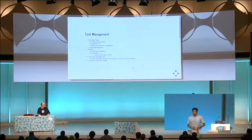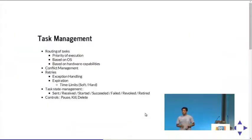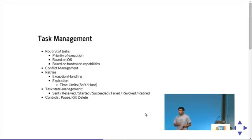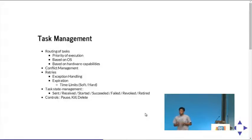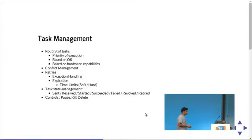Task management is a bit tedious in terms of understanding what kind of tasks you have. You may want to prioritize execution — for example, two machines where one connects to a faster primary database and one to a slower secondary. You can have priority execution using Celery by defining two queues — one fast queue and one slow queue. When you push tasks, push the faster tasks to the appropriate queue, and workers read one or both queues. You can also route tasks based on OS environment or hardware capabilities.